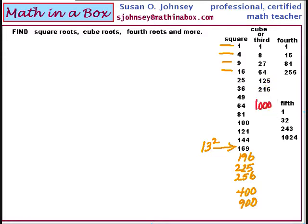Our next powers are the fourth powers. 1 to the fourth is, of course, 1. 2 to the fourth power is 16. 3 to the fourth power — that's 3 times 3 times 3 times 3 — is 81. 256 is 4 to the fourth power.